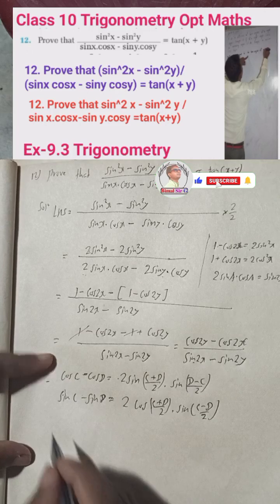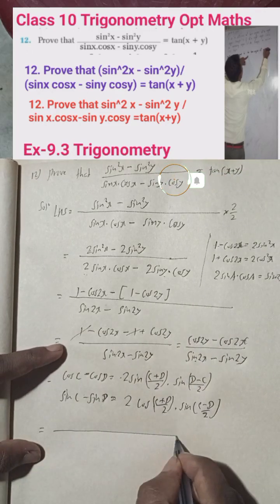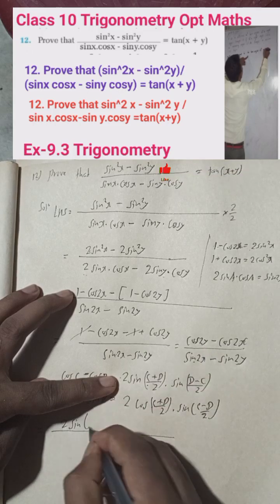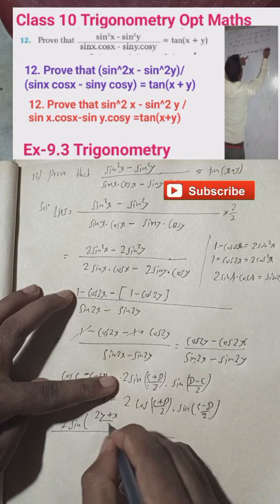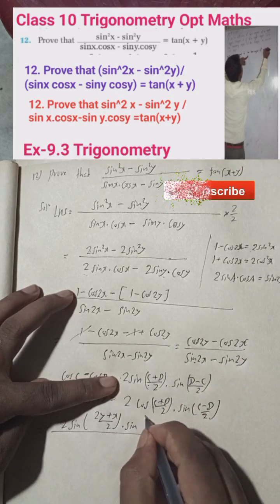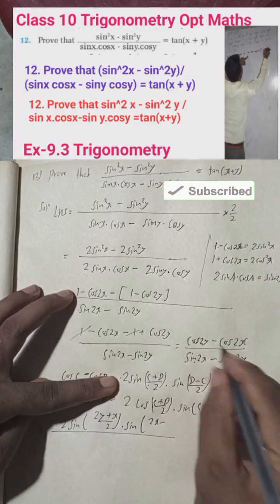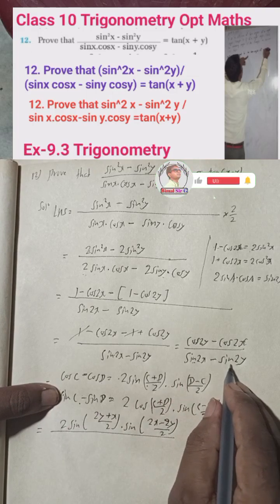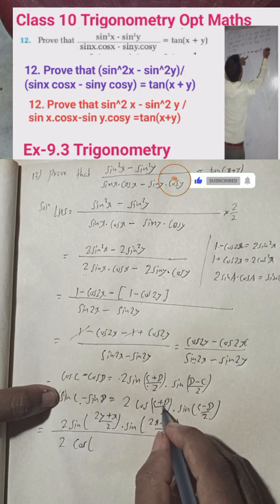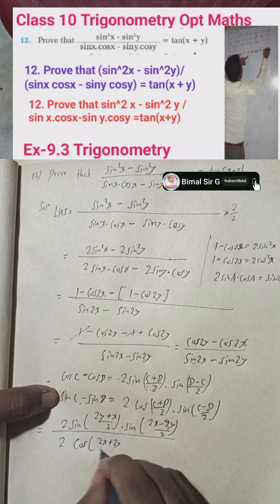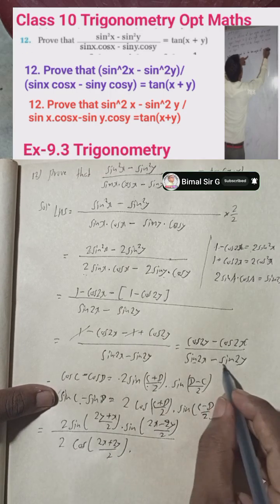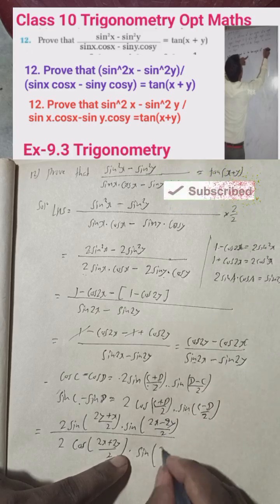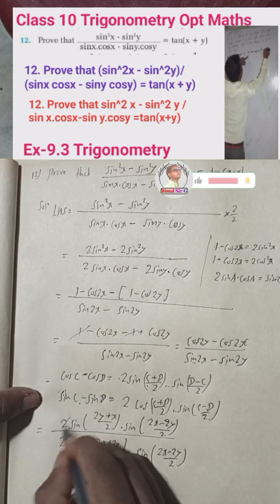Applying cosC − cosD to the numerator where C = 2y and D = 2x: we get 2·sin((2y+2x)/2)·sin((2x−2y)/2). For the denominator, applying sinC − sinD where C = 2x and D = 2y: we get 2·cos((2x+2y)/2)·sin((2x−2y)/2).